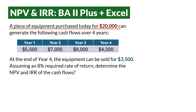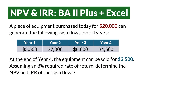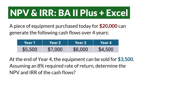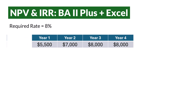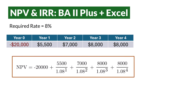A piece of equipment purchased today for $20,000 can generate cash flows over 4 years. At the end of year 4, the equipment can be sold for $3,500. Assuming an 8% required rate of return, we want to determine the NPV and IRR of the cash flows. Since the equipment can be sold for $3,500 in year 4, we add that inflow to the year 4 cash flow to give $8,000. The $20,000 purchase occurring today is added as year 0. Using the formula, we can compute the NPV using this calculation.